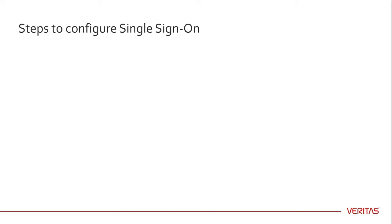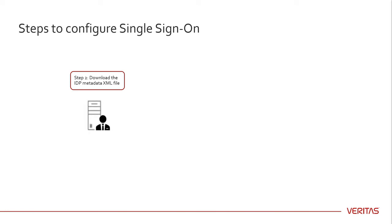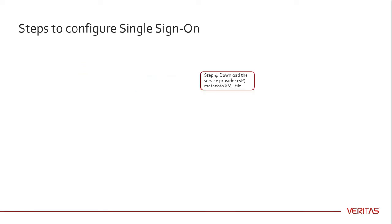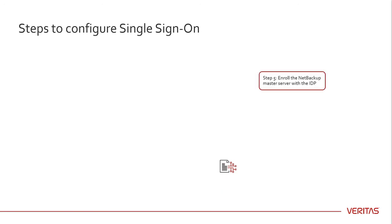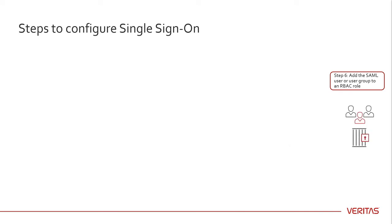To configure Single Sign-On, you must perform the following steps: Configure the Java Key Store on the NetBackup master server. Download the IDP metadata XML file from the identity provider. Add and enable the IDP configuration on the NetBackup master server. Download the Service Provider metadata XML file from the NetBackup master server. Enroll the NetBackup master server with the IDP as a service provider. Add the SAML user or user group to an RBAC role.